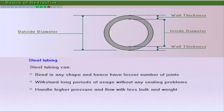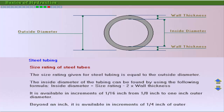Steel tubing is widely used as it eliminates many of the problems with steel pipes, though it is more expensive than pipe. Tubing is measured by the actual outside diameter. To size the tubing for flow rate, determine the inside diameter by subtracting two times the wall thickness from the outside diameter. For diameters larger than an inch, steel tubing is available in increments of one-fourth of an inch of the outer diameter.